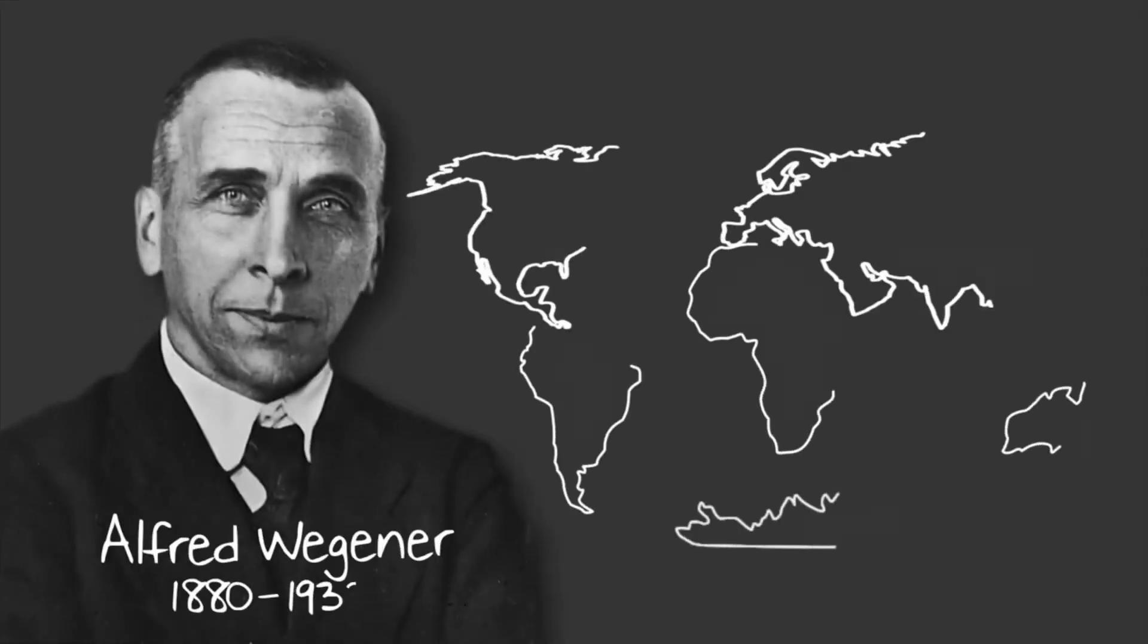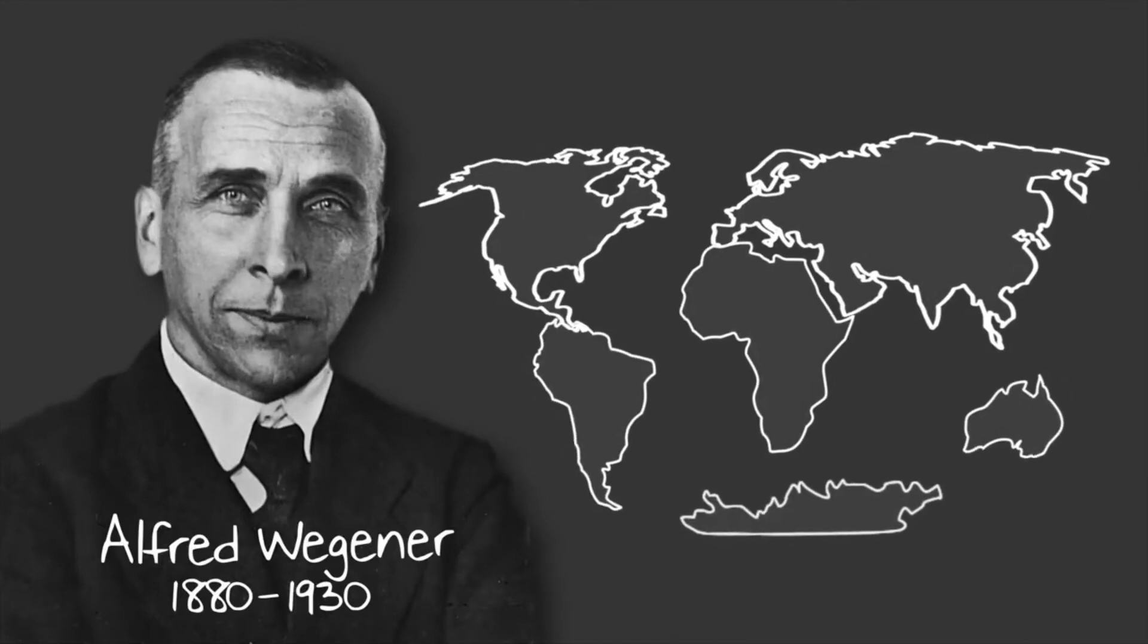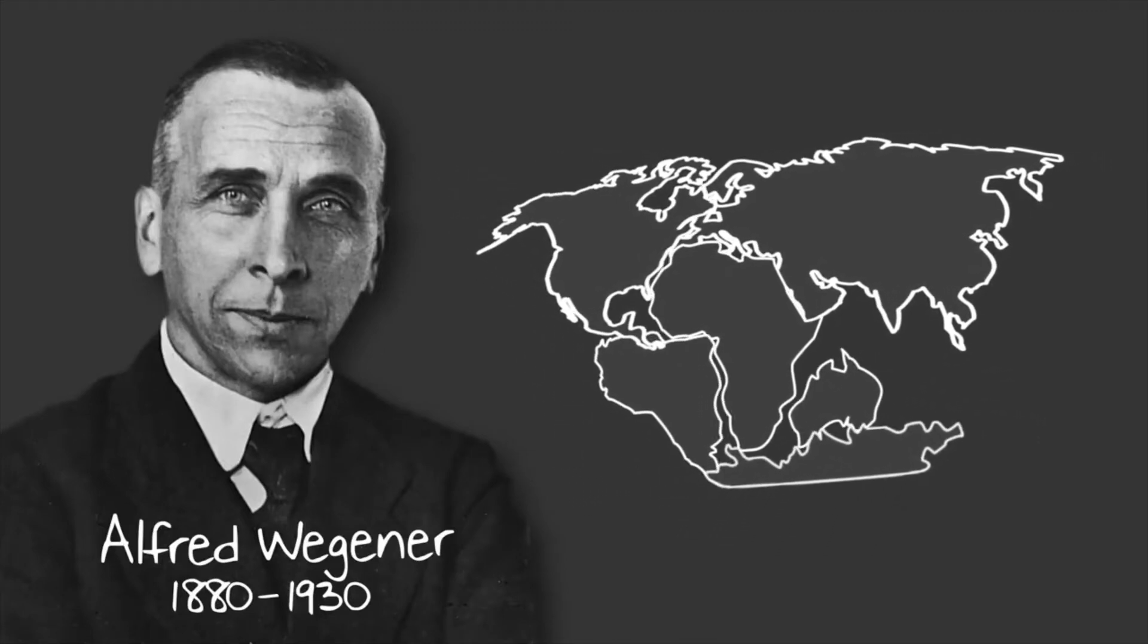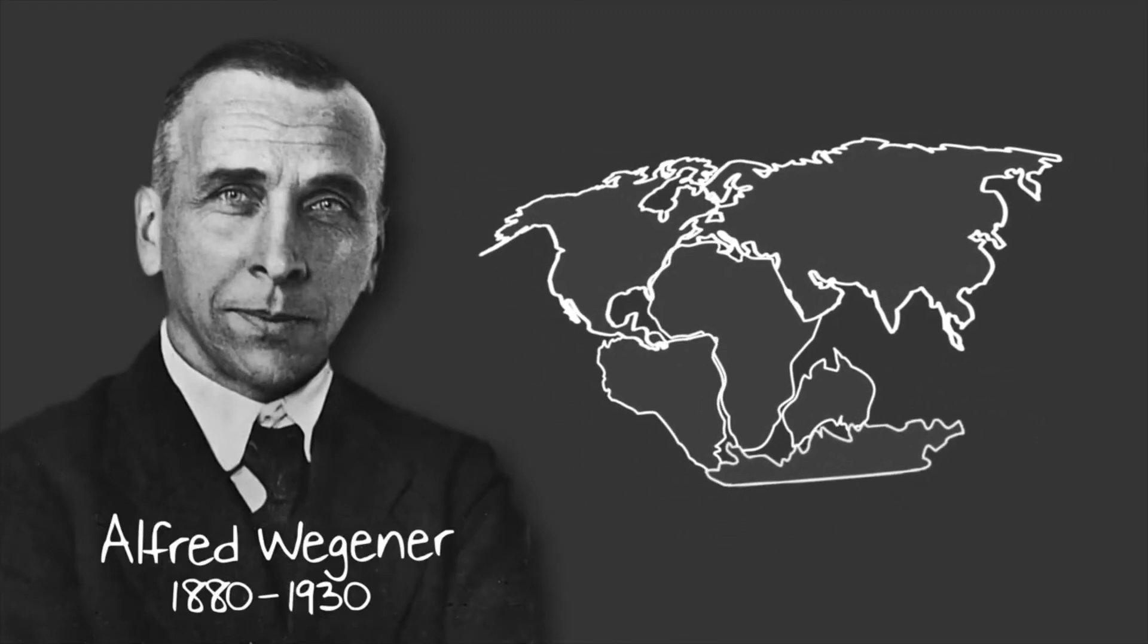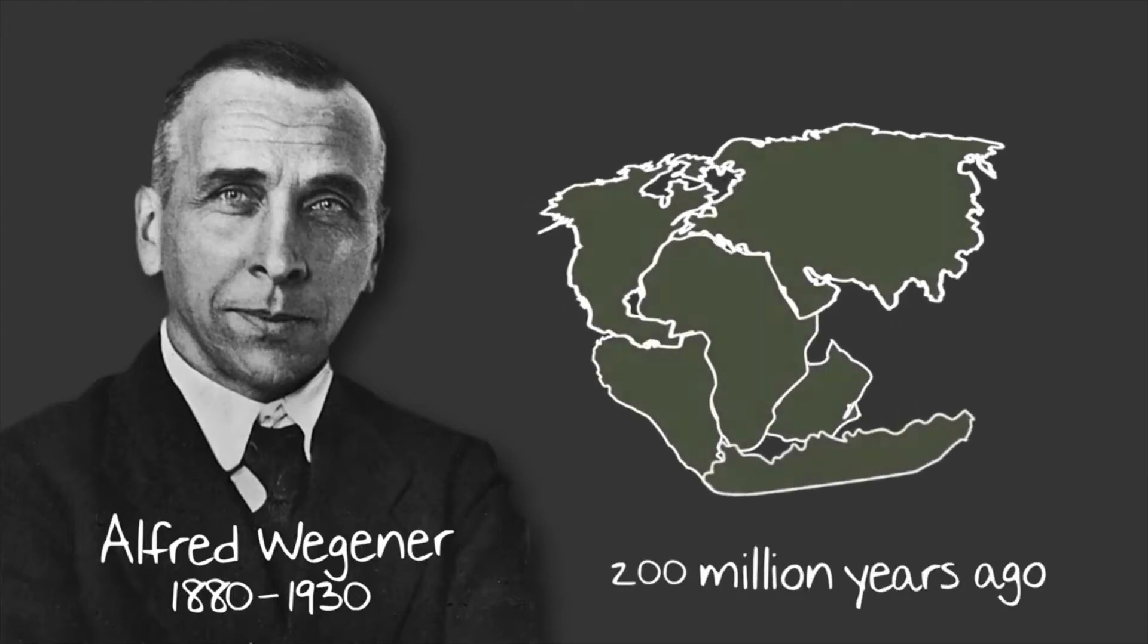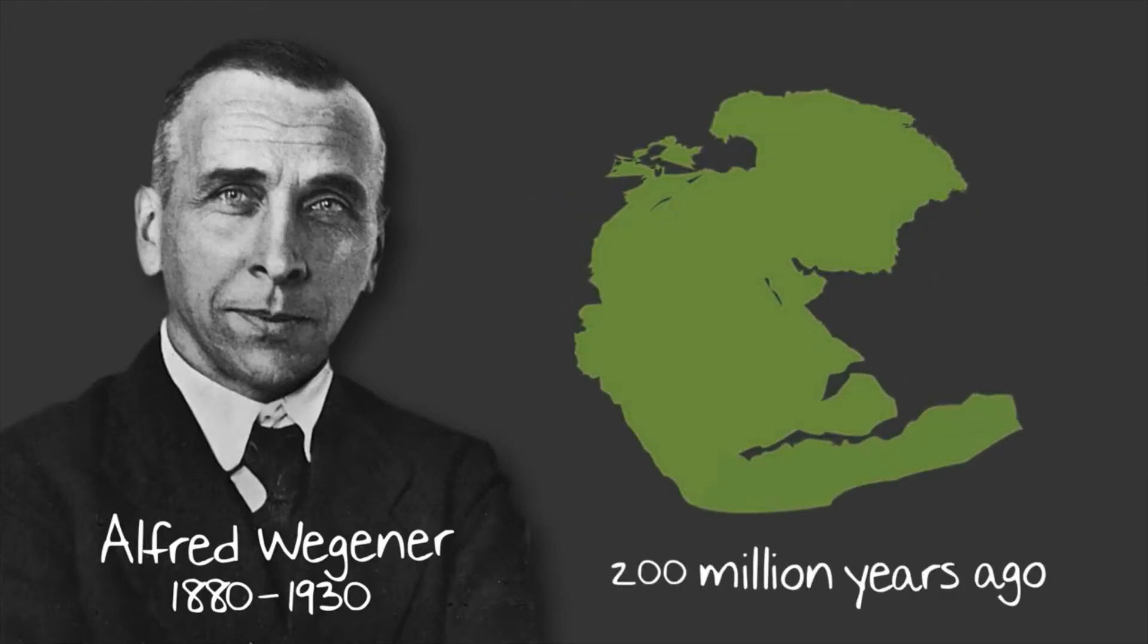In the early 1900s, a scientist named Alfred Wegener noticed that the coastlines of several continents look like they fit together, similar to puzzle pieces. He believed that around 200 million years ago, all of the continents were joined together in one large supercontinent that he called Pangaea, which is Greek for all the earth.